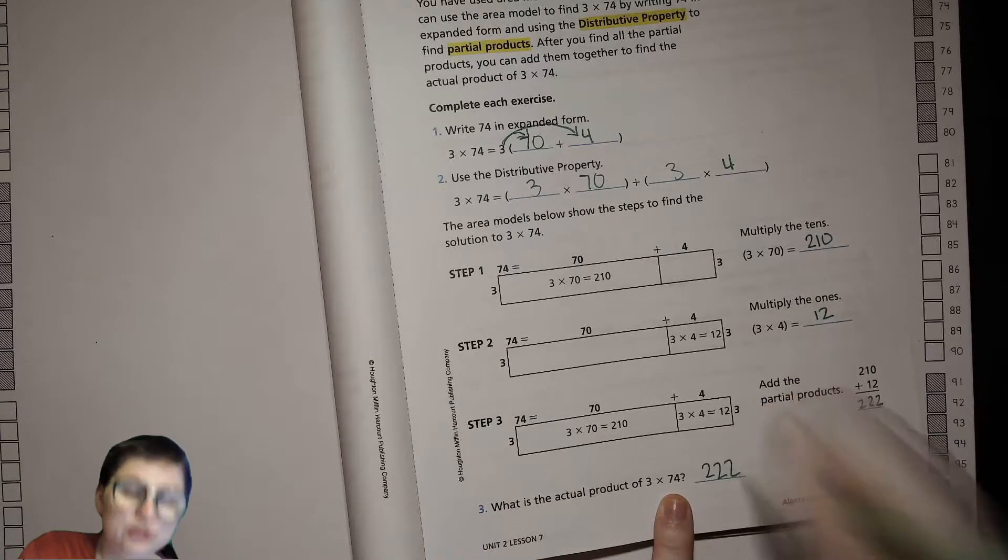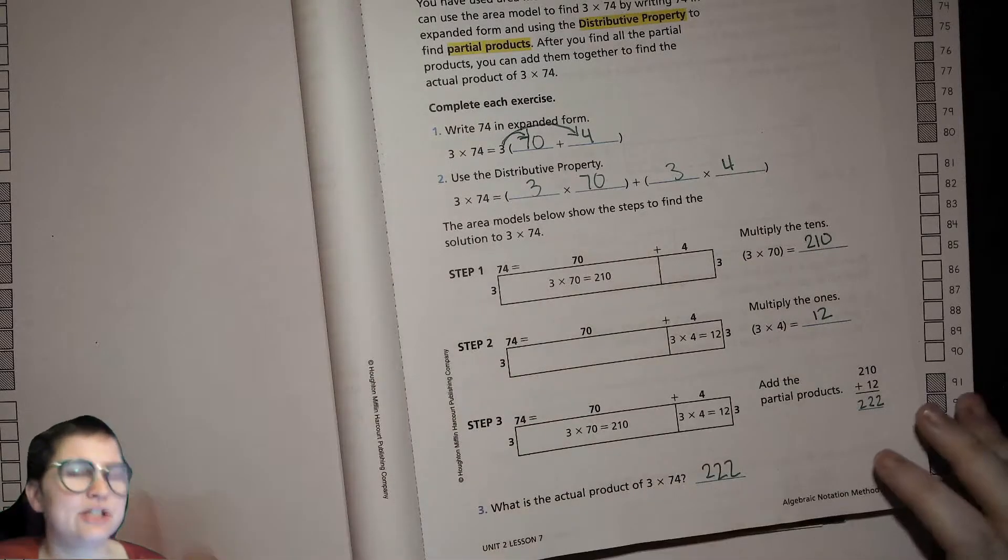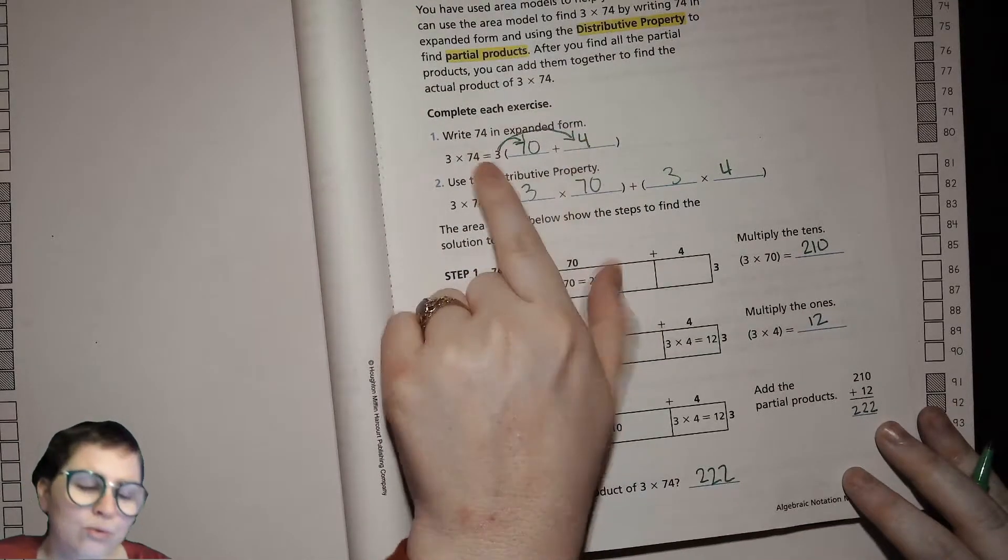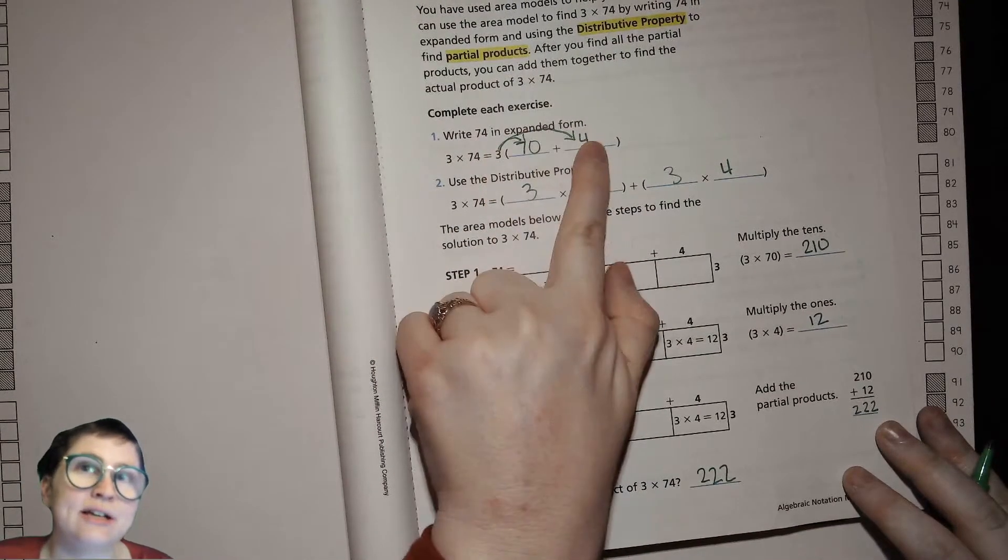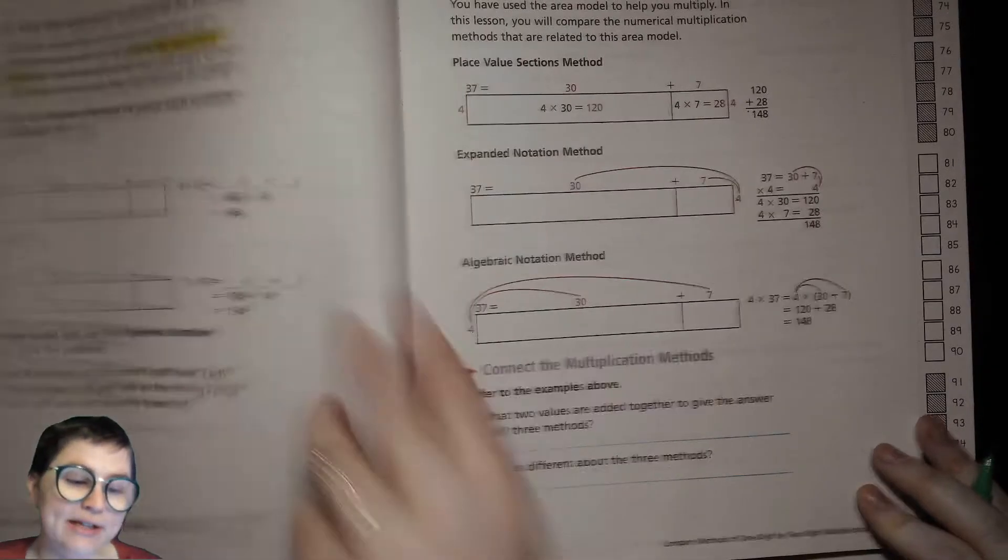So 0 plus 2 is 2, 1 plus 1 is 2 tens, and 200 is 200. So the actual product of 3 times 74 is 222. It's really just exactly what we have been doing before, but now we're making sure that 3 goes out to everybody.